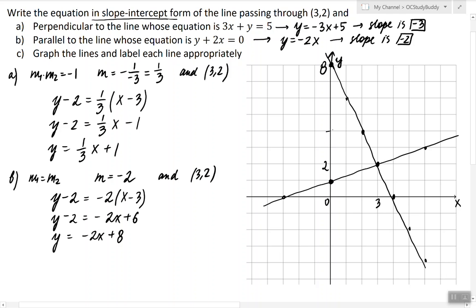So we found the equations of the lines and graphed them. Let's label them: this line is y equals one third x plus 1, and this line is y equals negative 2x plus 8.